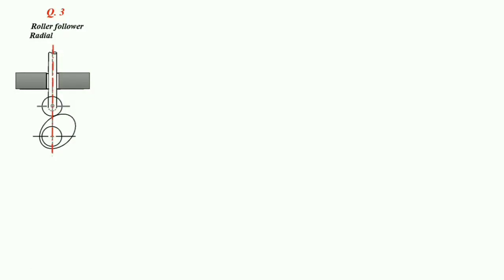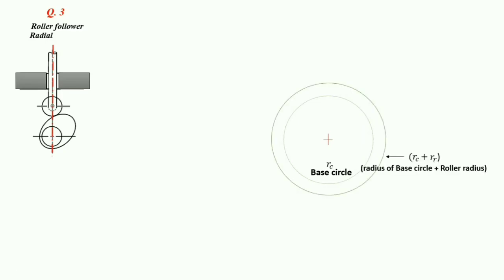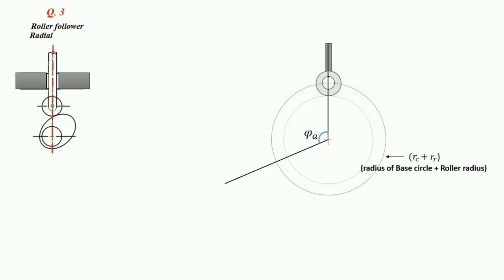The next numerical is on roller follower with radial position. First we will draw a base circle having radius RC, then draw another circle with radius equal to the base circle radius plus the roller radius. This is the roller follower circle. We will divide this circle into angles: phi A, delta 1, phi D, and delta 2.